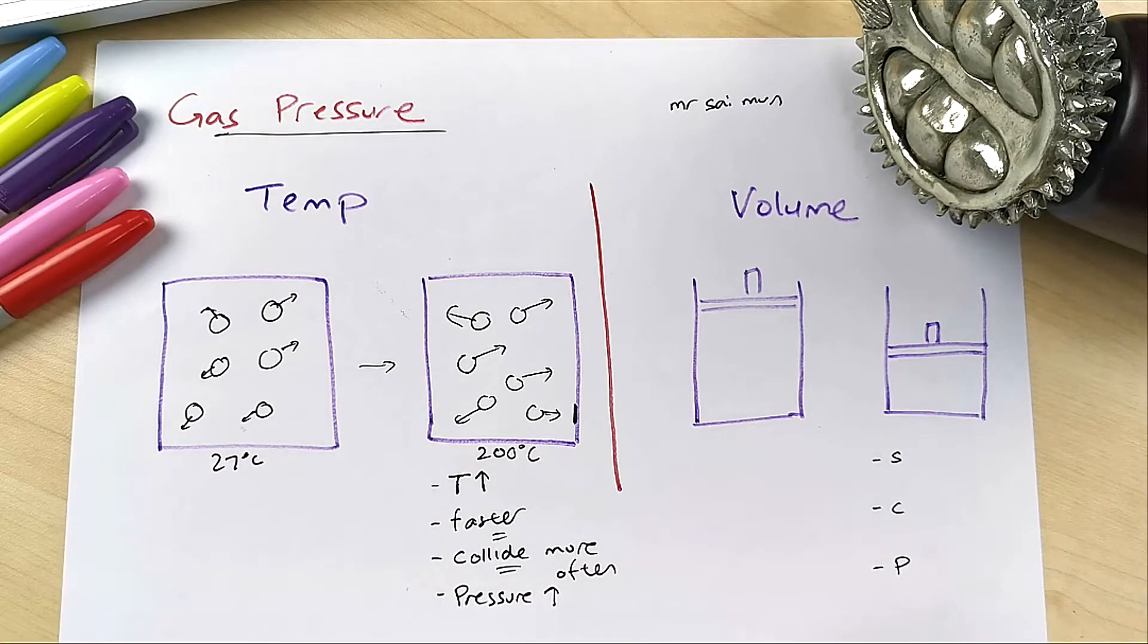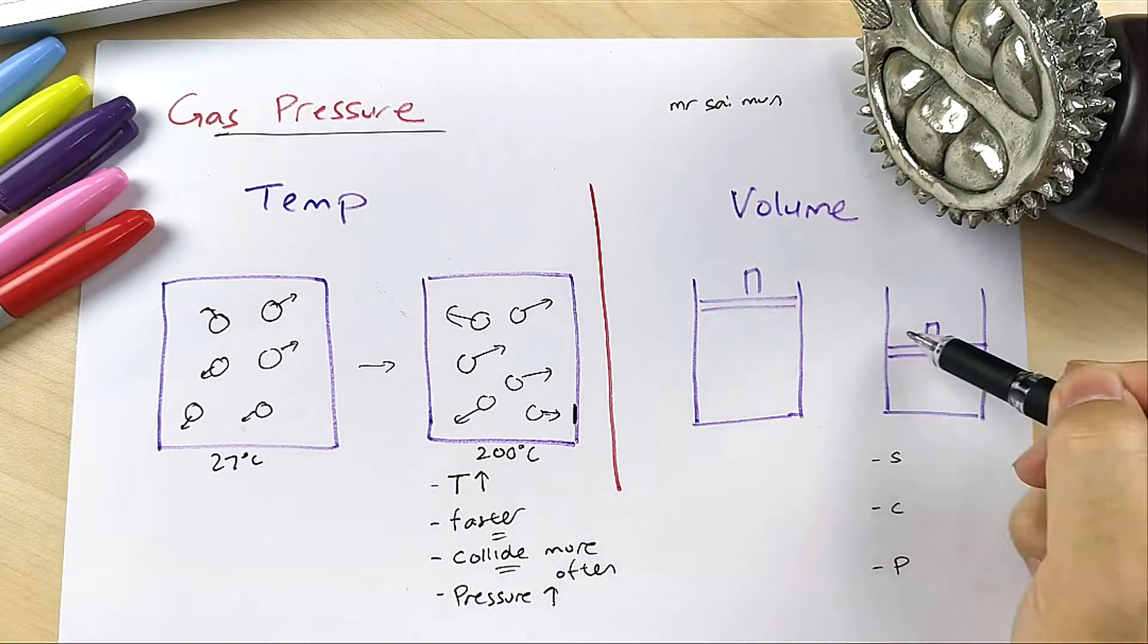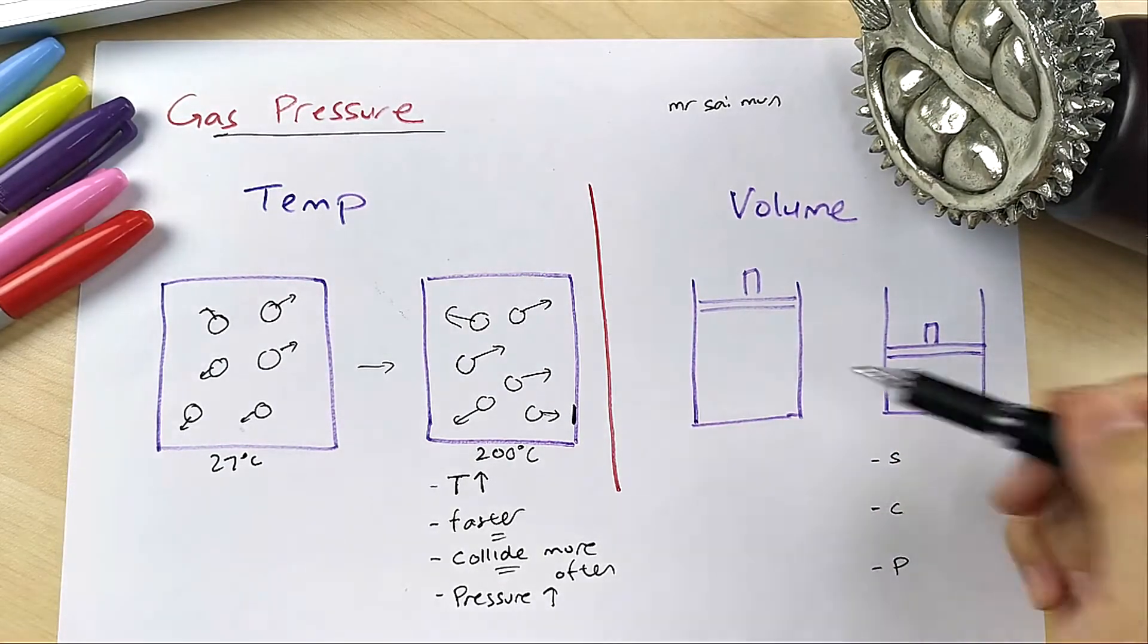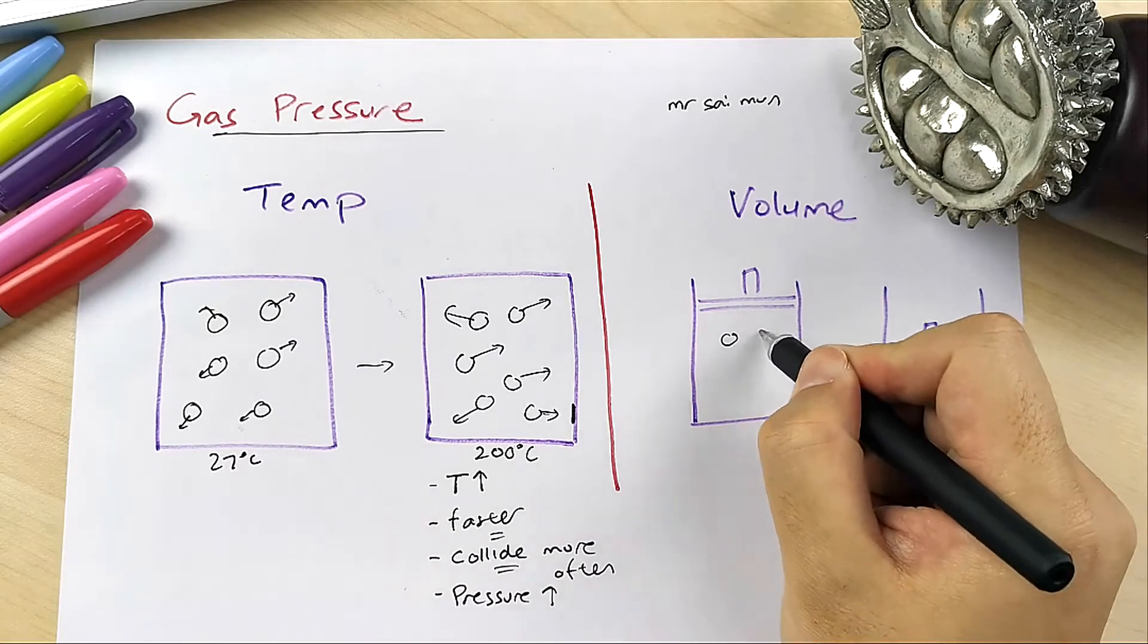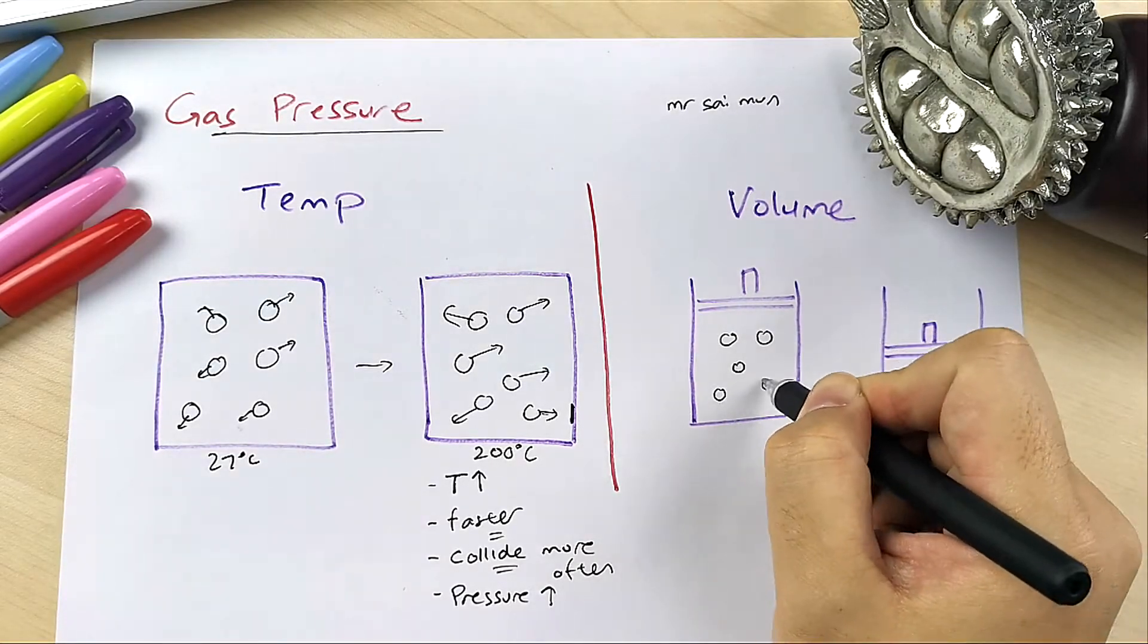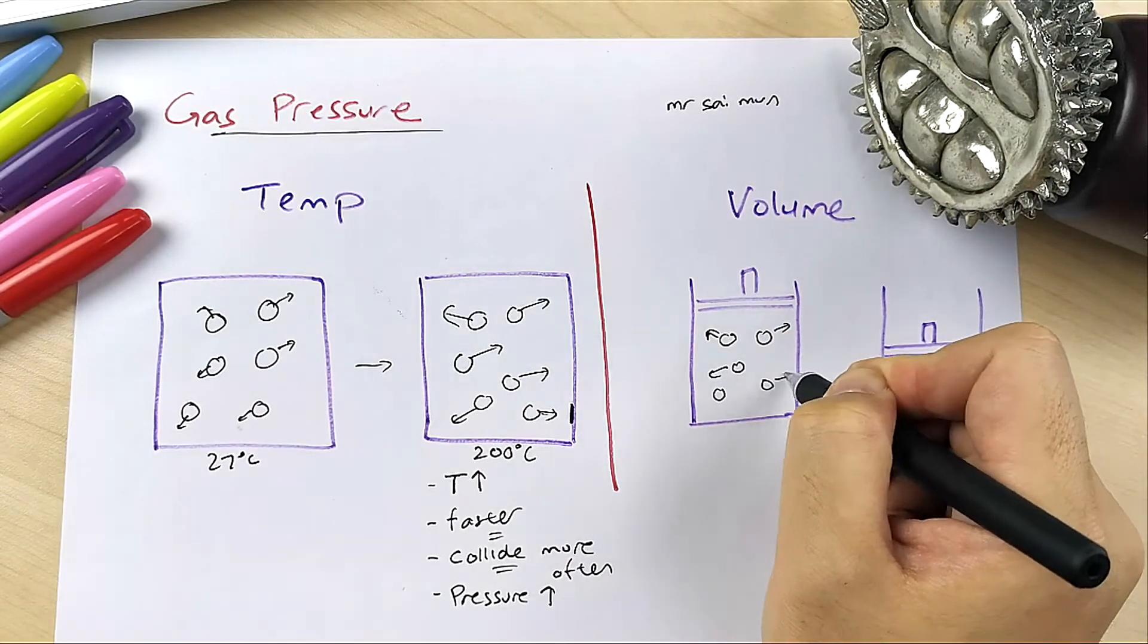Next, volume. If there's this gas pump, canister, or to be more exact, a piston - imagine there are five gas particles here. They are colliding, moving around, colliding with the wall.